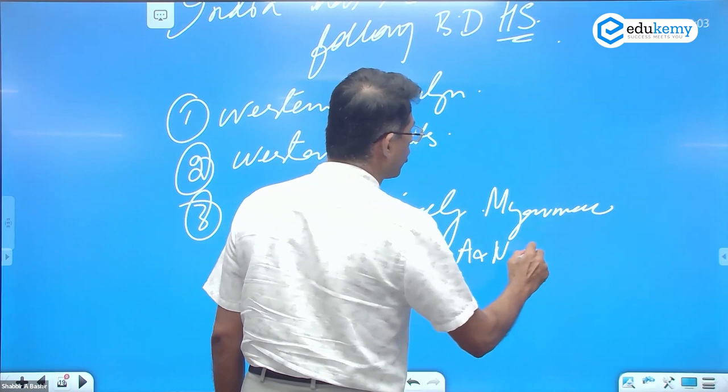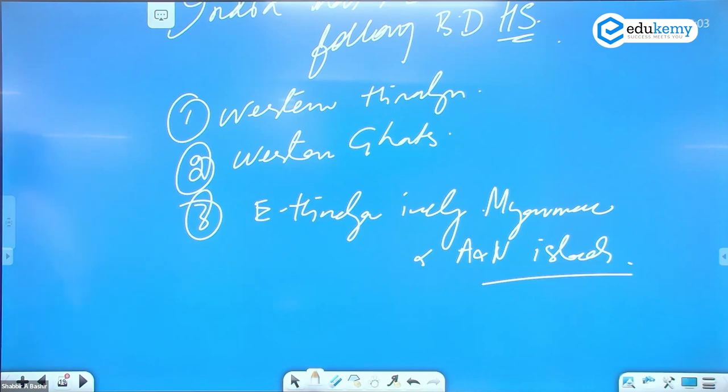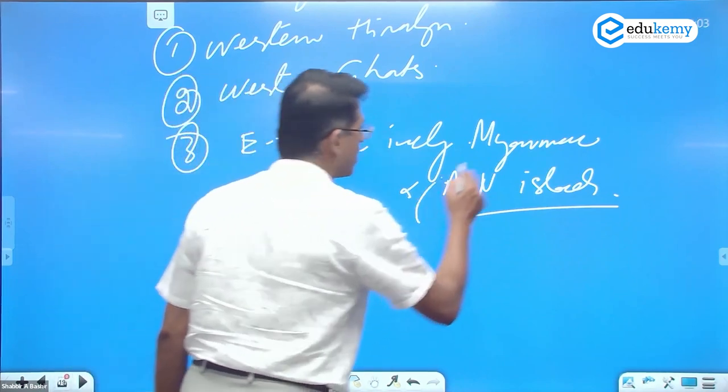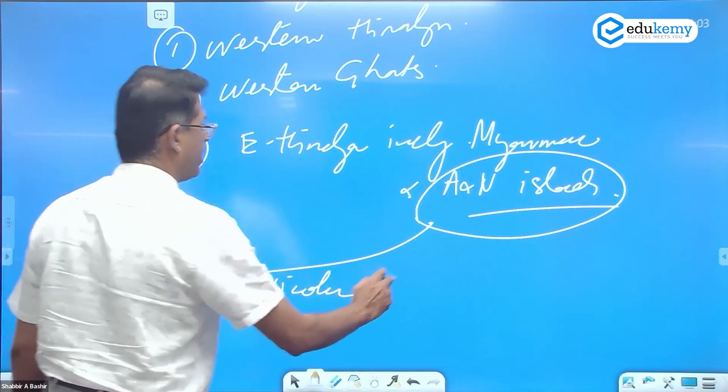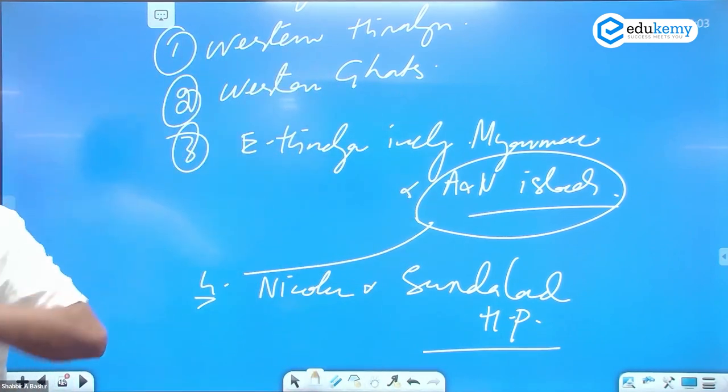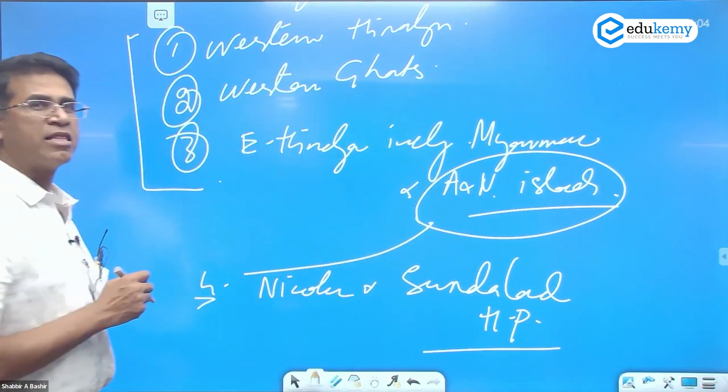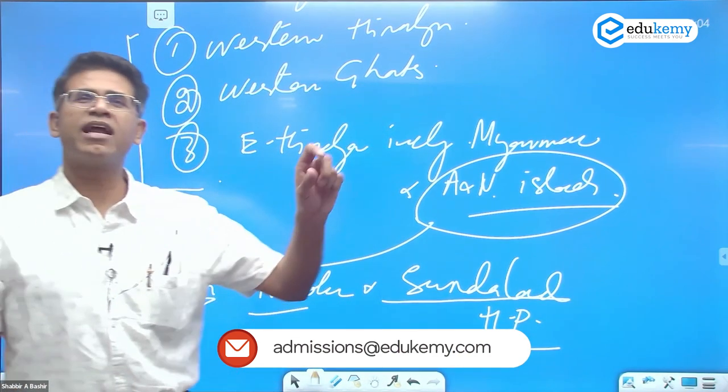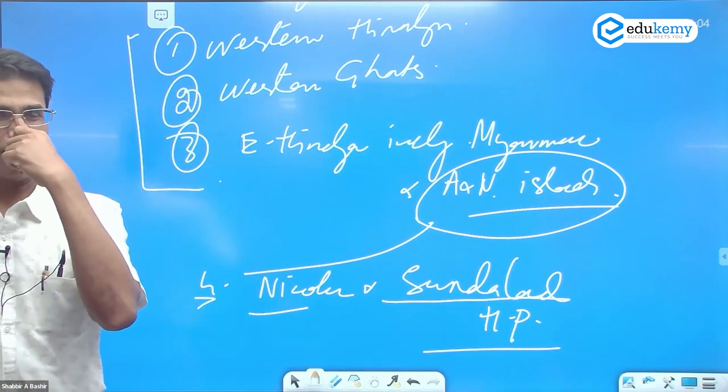Number three is Eastern Himalayas including Myanmar, and the Andaman and Nicobar Islands. Sometimes Andaman and Nicobar are kept separate as Nicobar and Sundaland hotspot - it becomes a part of Indonesia. Some books write it as three, some might separate Andaman and Nicobar as the Nicobar and Sundaland hotspot. Sundaland is largely part of Indonesia, Sumatra and the rest.